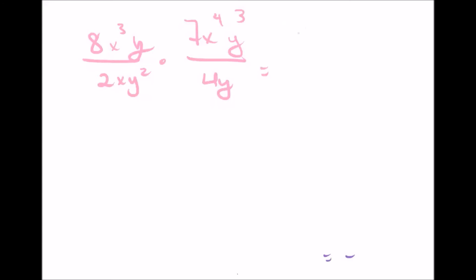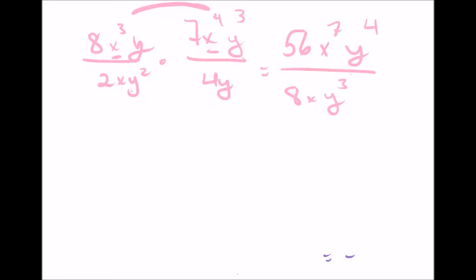So you have 56. Remember, multiply the tops and the bottoms — that's how you multiply fractions, just numerators together and denominators together. So 56x to the seventh. When you multiply exponents together, you add them. On the bottom, we have 2 times 4 is 8. There's no x on the other side. And y squared times y to the first is y cubed. At this point, you're just going to apply the rules for dividing exponents. So 56 divided by 8 gives us 7.